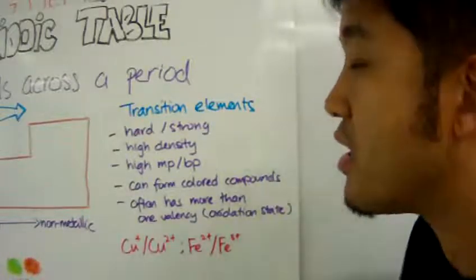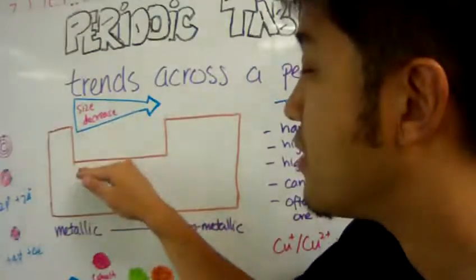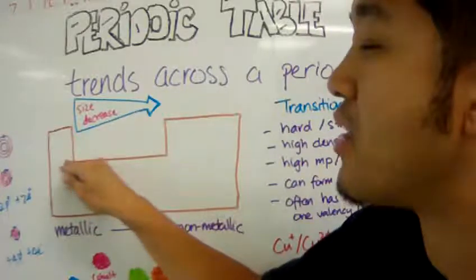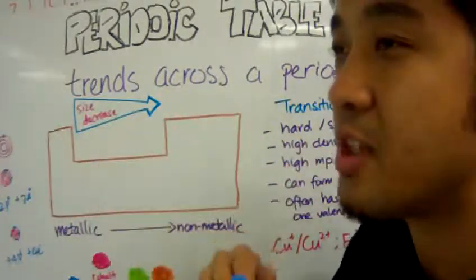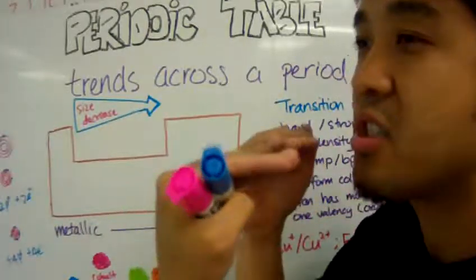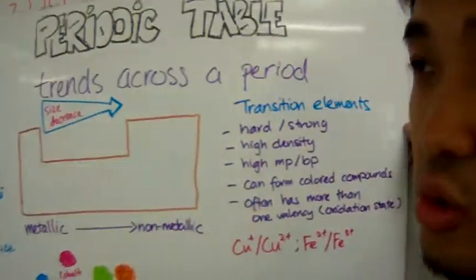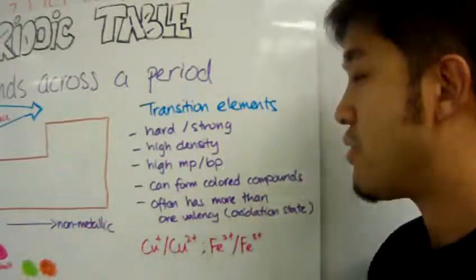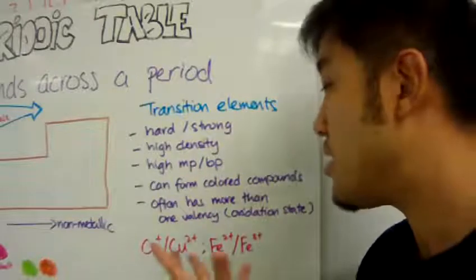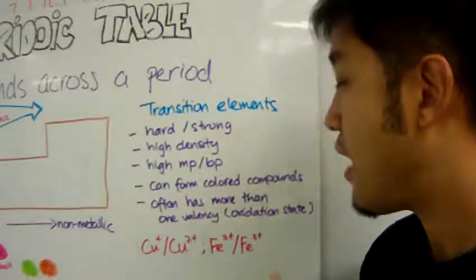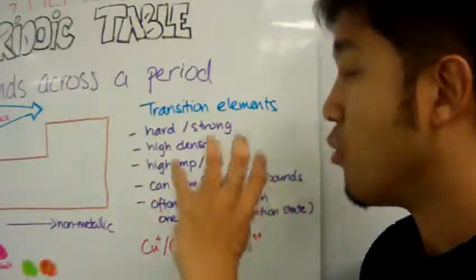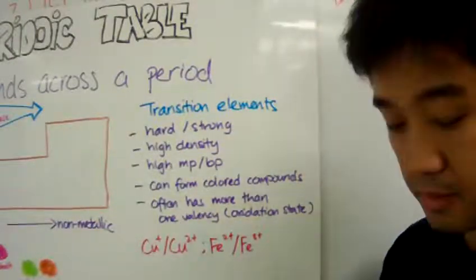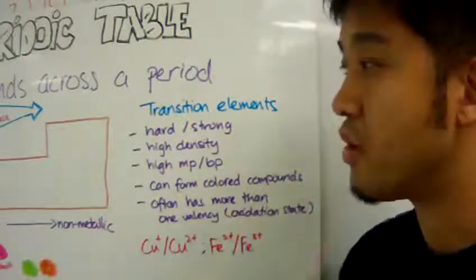And the reason why it forms colored compounds, again, it has to deal with the energy level between the transition elements block and to another energy level that is quite similar in terms of energy state. And that's a topic that gets a little too deep for us. But we know that transition elements usually, and more often than not, have more than one type of valency. That means when it forms compounds, it can either have an oxidation state of one, two, three, or more. So that's what's cool about it. That's it for trends across the period.